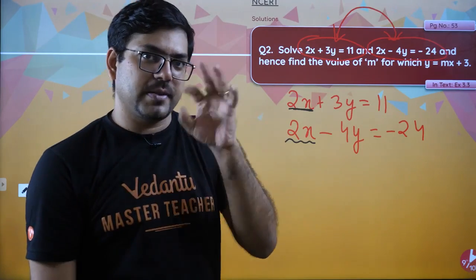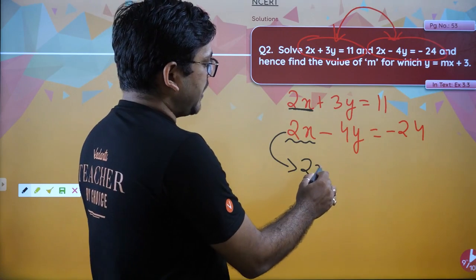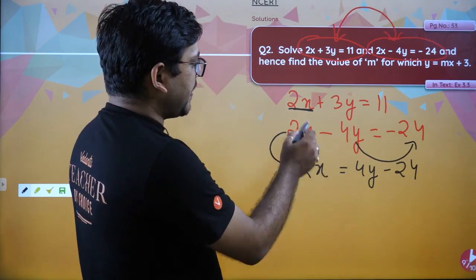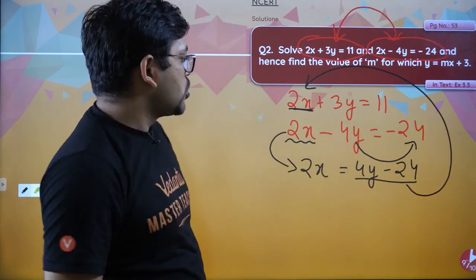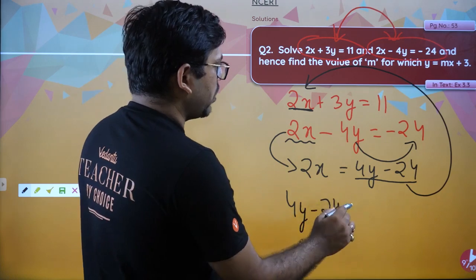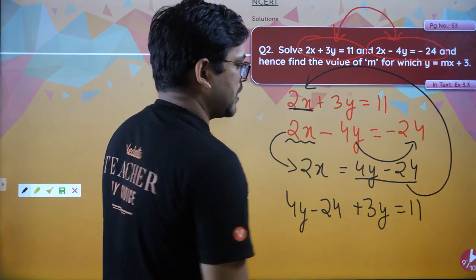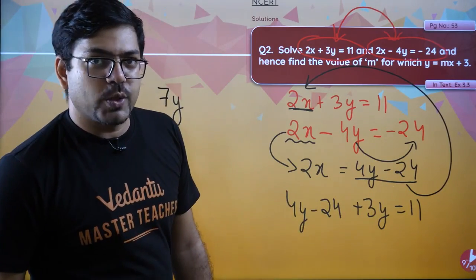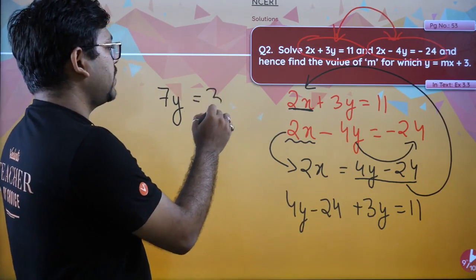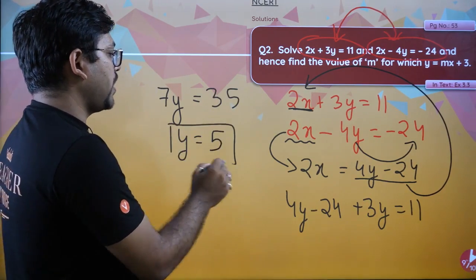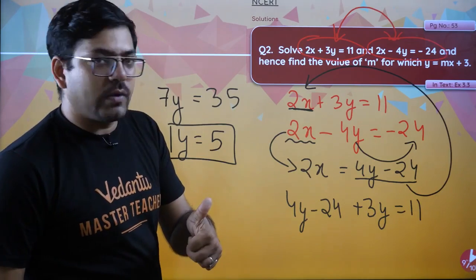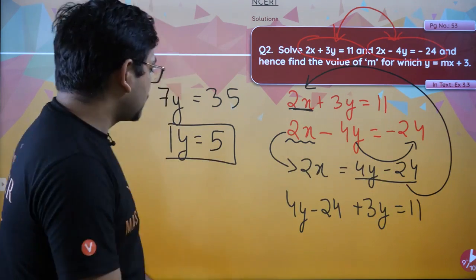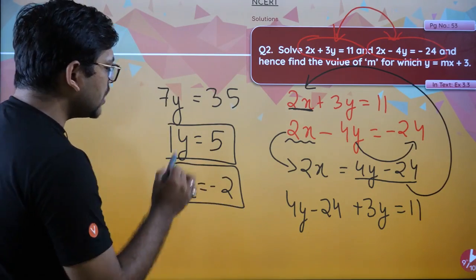If we talk about substitution in this chapter, let me explain what to do. The value of 2x from the second equation is 4y - 24. So 2x = 4y - 24. Put this value in the first equation: 4y - 24 + 3y = 11. So 4y + 3y = 7y. Moving -24 to the other side gives 11 + 24 = 35. So 7y = 35, which gives y = 5. Once we have y = 5, substituting back: 4(5) - 24 = 20 - 24 = -4, so 2x = -4, giving x = -2. Now we have both x and y.